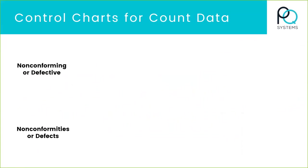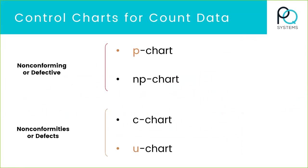For control charts, we've talked about charts for measurement data, but there are also control charts for count data. When you're looking at defective items, defects, nonconforming, or nonconformities, there are four common types of attribute or count data control charts. Two of those four are quite common: the P chart — think of it as a chart of percents or percent of defective items — and the U chart, which is defects per so many units. Many times in healthcare or hospital settings, they use U charts when they look at defects such as patients who get infections — for example, an infection rate of one per 1,000 patient days.